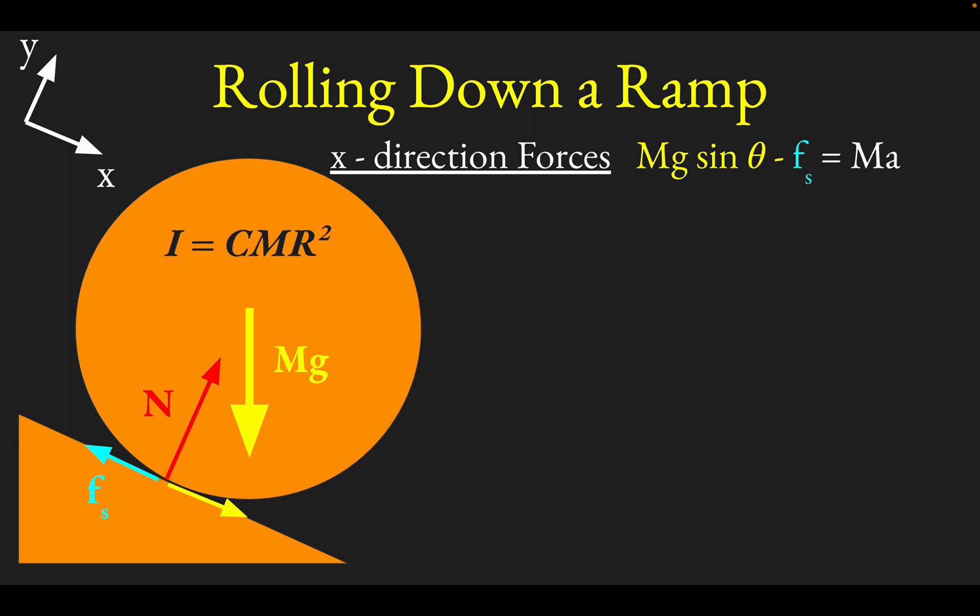Now what we'll do is look at rotation. Let's look at the torques. If we look at the torque about the center of the object, the center of this thing, you'd see that there would only be a torque provided by friction. The normal force extends right through the center of the object, and Mg acts at the center of the object.